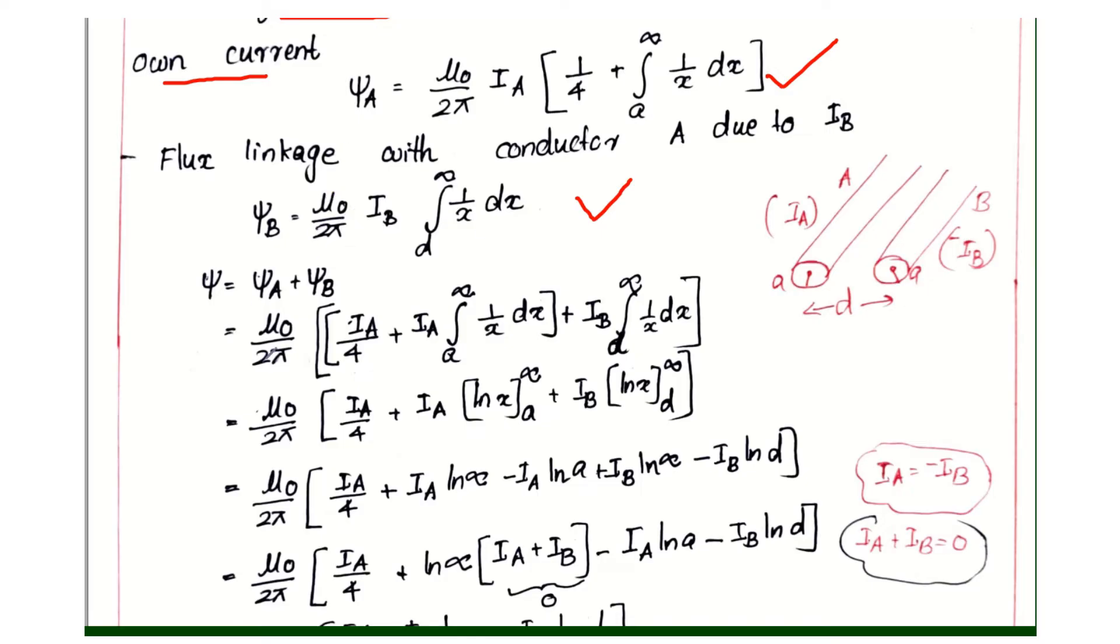Plus second case, μ₀ divided by 2π and IB into integral D to infinity, 1 by x dx.